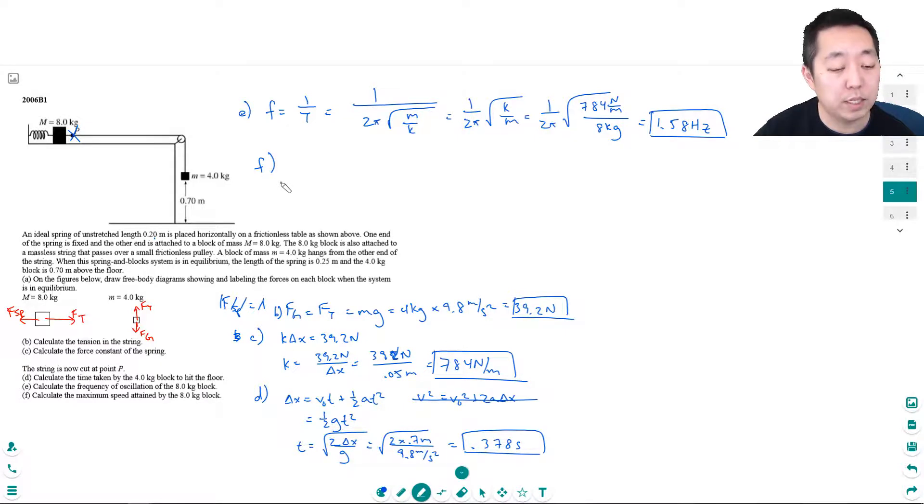And then f, calculate the maximum speed attained by the 8 kilogram block. The way you do that one is pretty simple—it happens when all of the potential energy in the spring turns into kinetic energy.